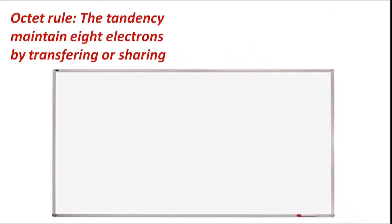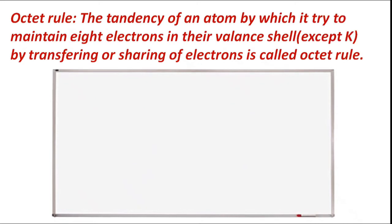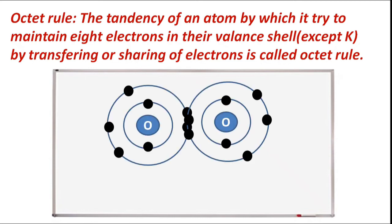Octet rule: the tendency of an atom by which it tries to maintain eight electrons in its valence shell, except the K shell, by transferring or sharing electrons, is called the octet rule. In an oxygen molecule, two oxygen atoms share two electrons and complete their octet, leading to the formation of an oxygen molecule.